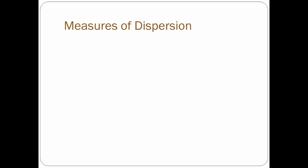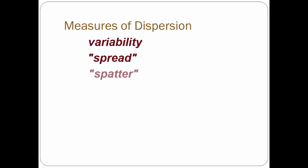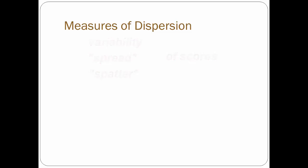Let's start with a brief discussion of measures of dispersion, which deal with the variability, or spread — sometimes called the scatter — of scores. Measures of dispersion help us understand the range and variability of scores.